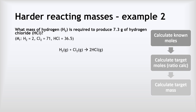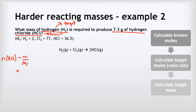Example two: what mass of hydrogen H2 is required to produce 7.3 grams of hydrogen chloride HCl? Hydrogen is our target and hydrogen chloride is our known substance. The number of moles of HCl equals mass over Mr: 7.3 grams divided by 36.5, which gives us 0.2 moles of HCl. That's the first step done.